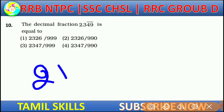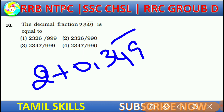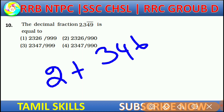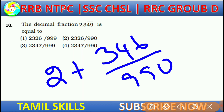Now, 2 plus 0.349 bar. The repeating part is 349, and the denominator with 3 repeating digits over 1 non-repeating digit gives 990. So 349 minus 3 is 346, giving 346 by 990. So the full value is 2 plus 346 by 990. Cancel it down.